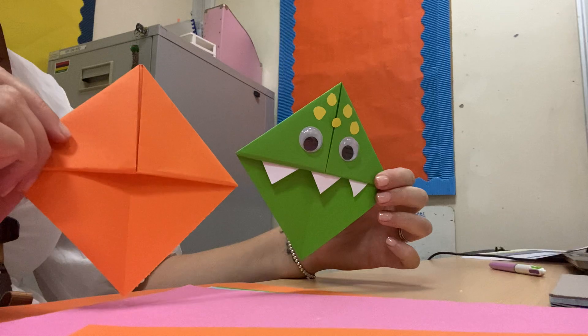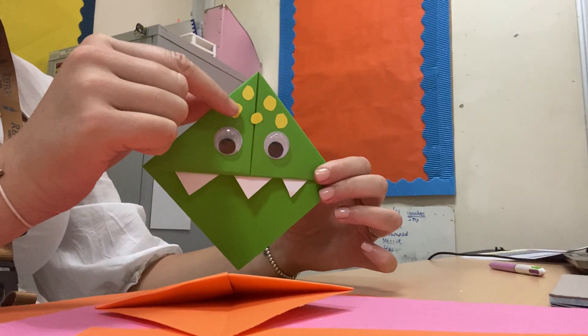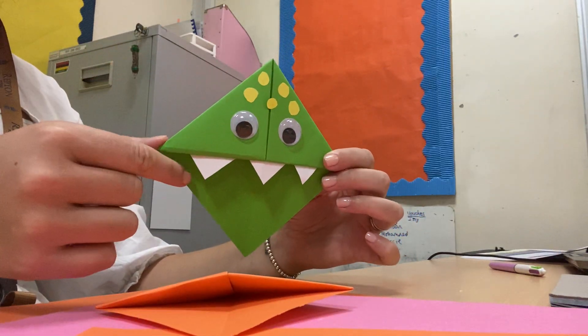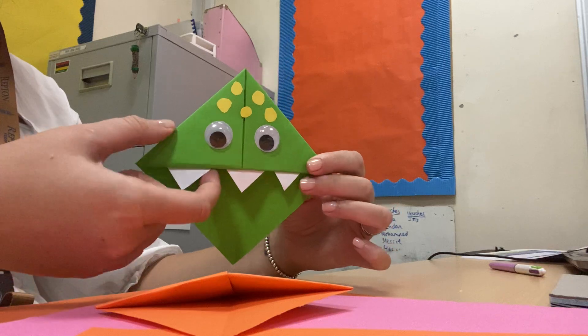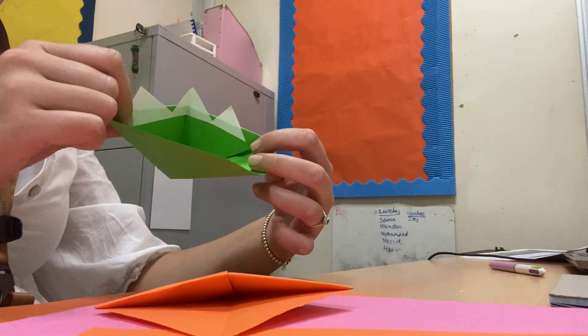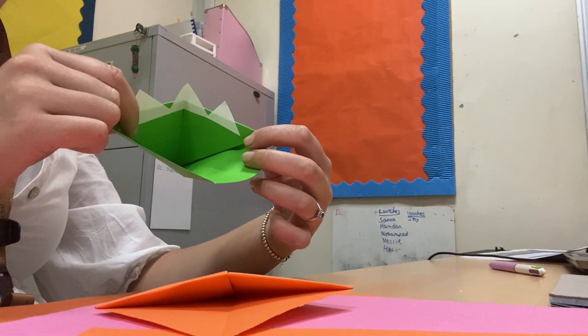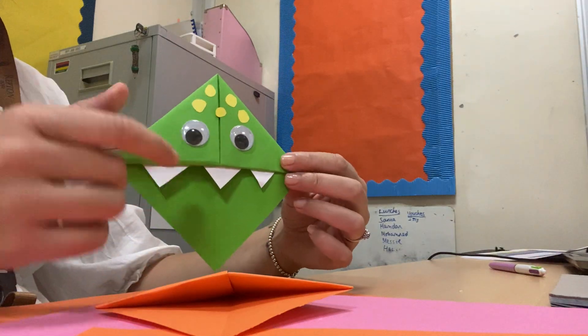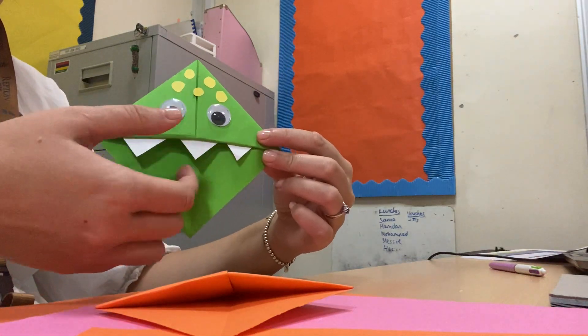So I've got my googly eyes on. I've decided that I'm going to have some yellow spots on my monster and the teeth. So I've cut out triangles for the teeth and then stuck them underneath, look underneath in my little pocket. So you could also have a tongue coming down here.